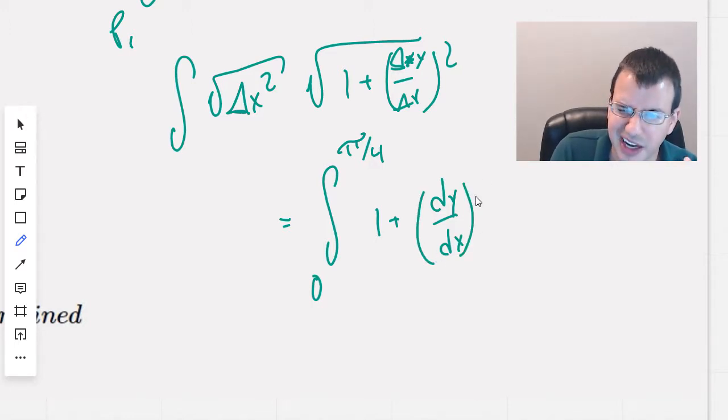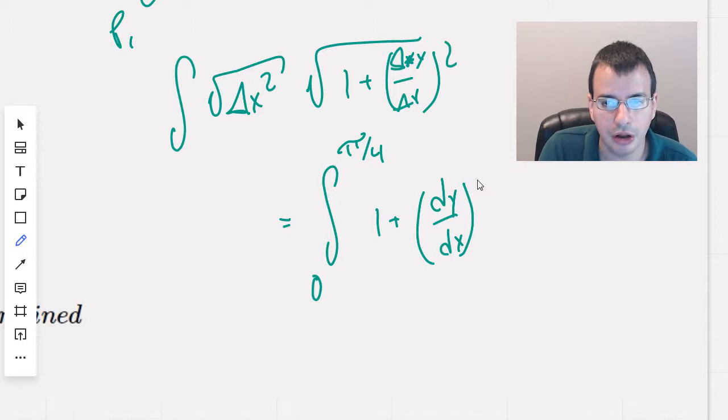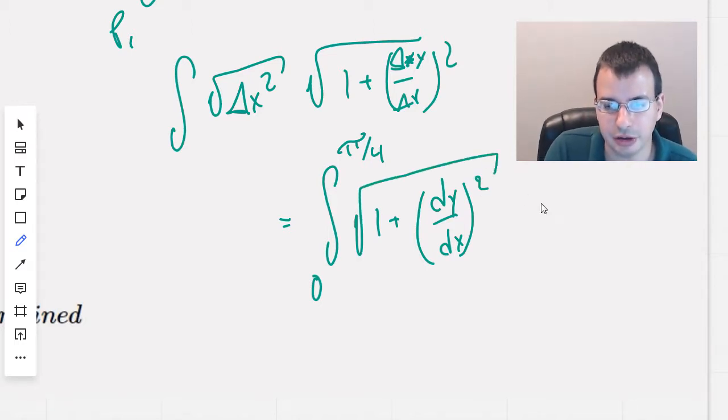Basically we'll move the finitely small, really small increment to an infinitely small increment, dx.